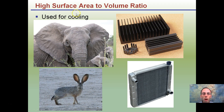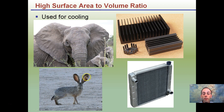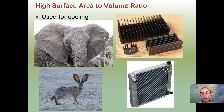To put a high surface area to volume ratio in biological perspective: rabbit ears and elephant ears are used for cooling because their high surface area to volume ratio allows heat to exchange easily. Similarly, heat sinks and airfoils on computers, and radiators in cars, increase surface area to allow heat to escape. All of these examples have a very high surface area to volume ratio.